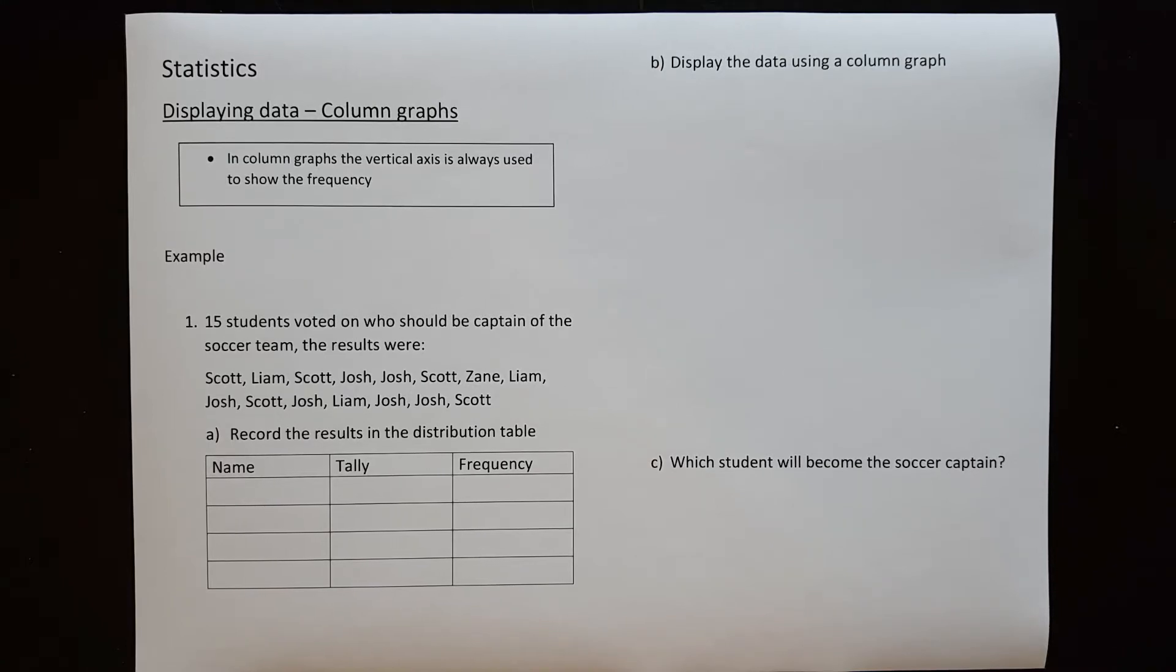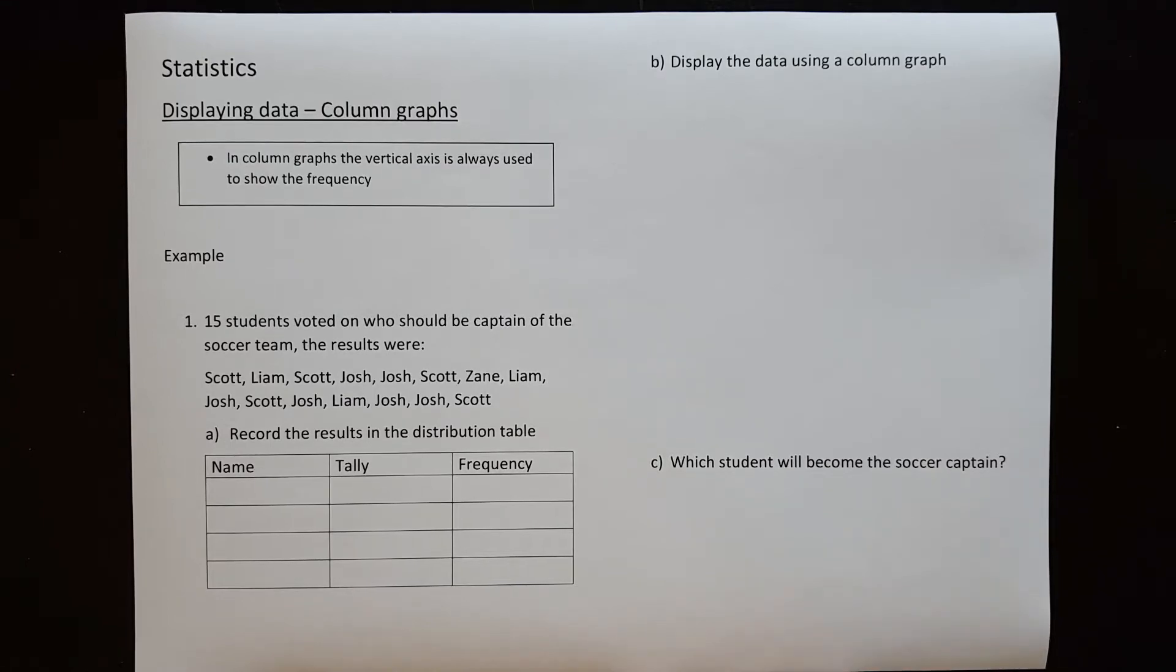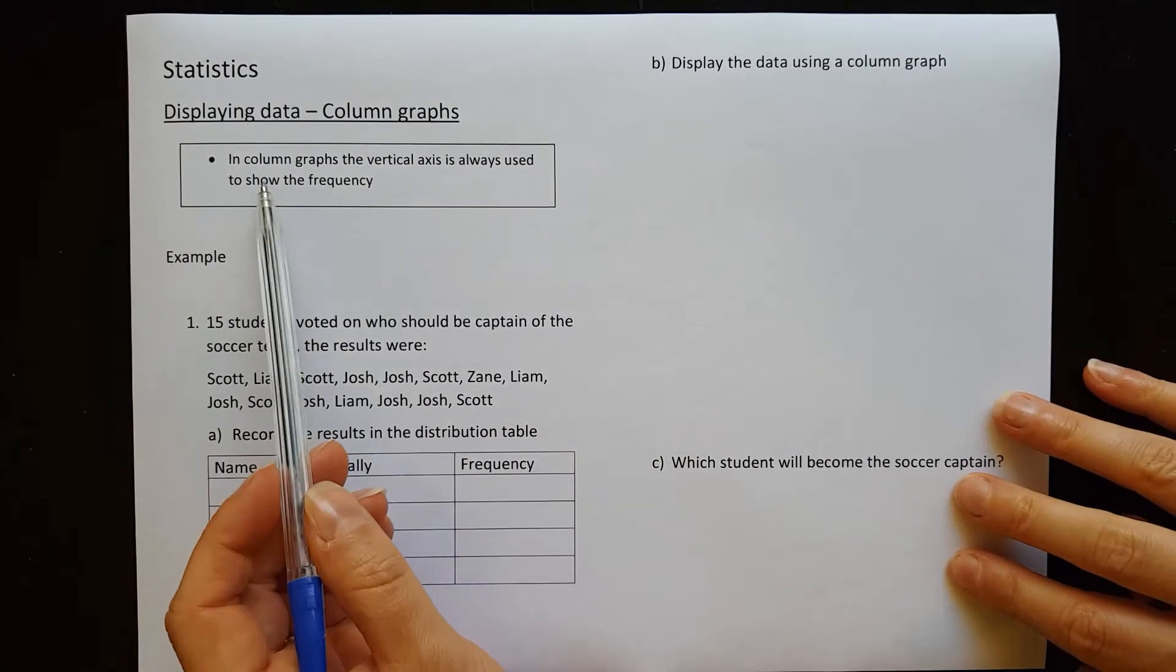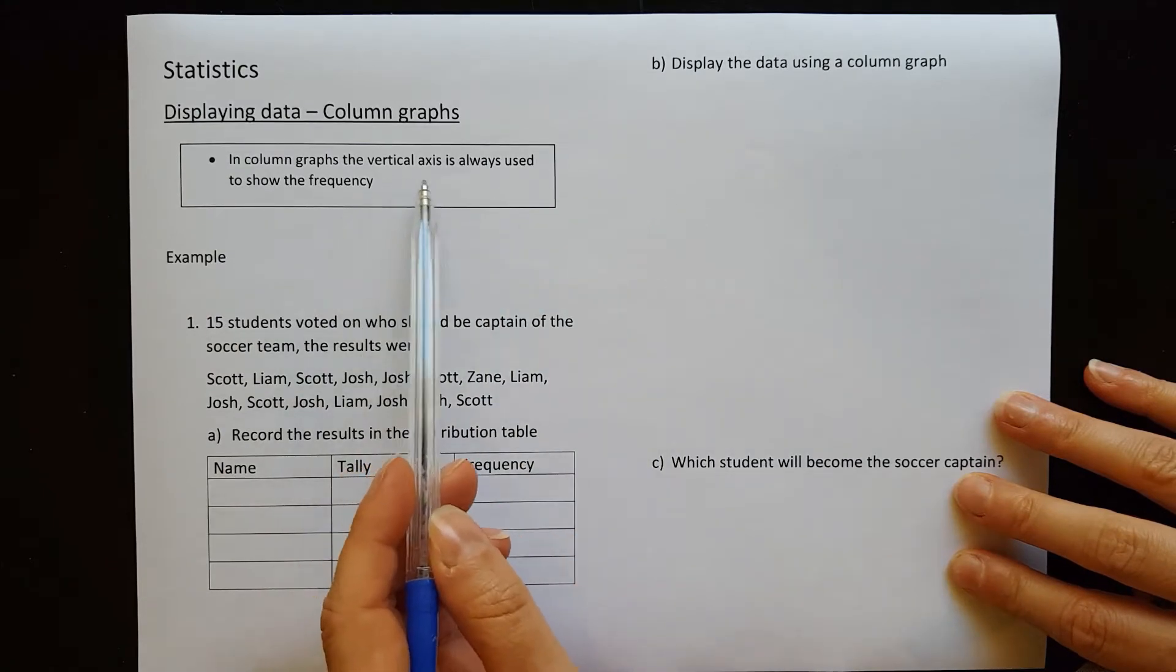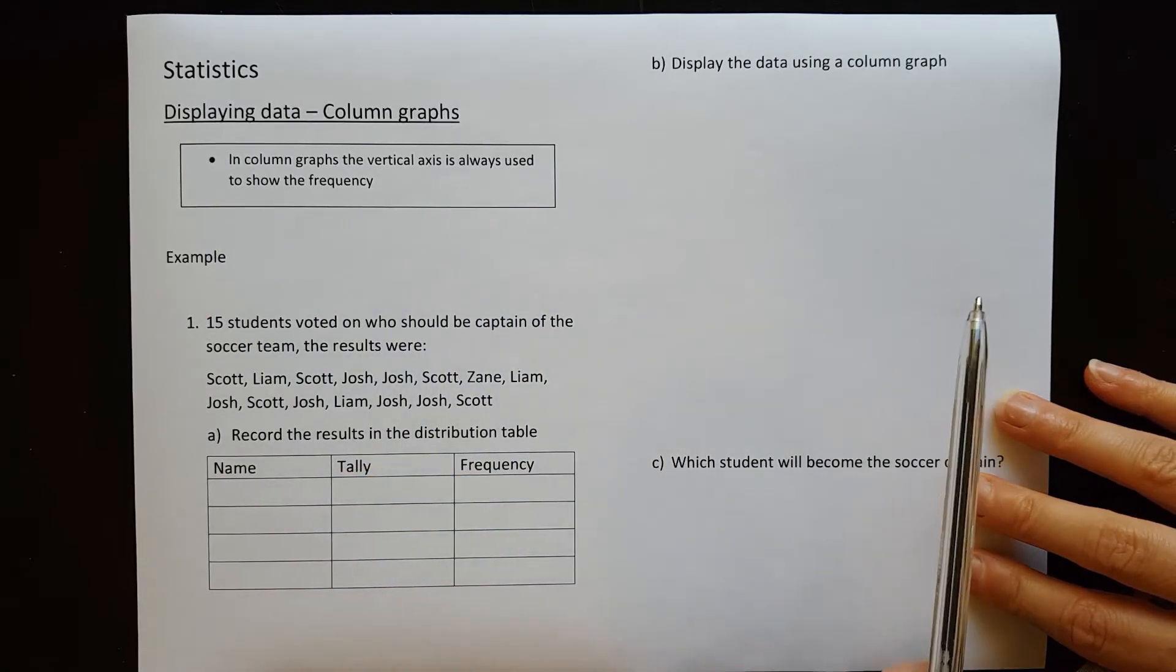So statistics, a lot of statistics is about showing your results so that people can see at a glance what happened with your survey. A column graph is just one of the ways of displaying the data today. We have a little note here that in a column graph, the vertical axis is always used to show the frequency.